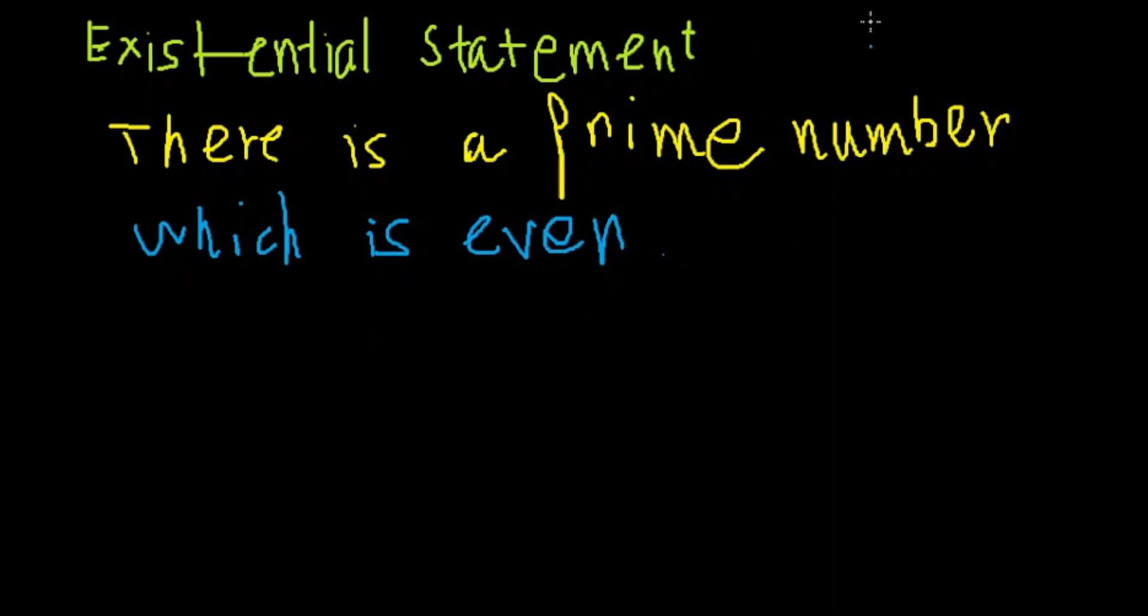So in this statement, is this statement true or false? This is true because there is a number which is both prime and even. That is two. It is both prime and even number.